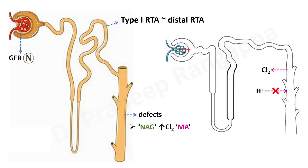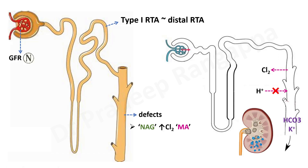In type 1, there is failure of hydrogen secretion in the collecting tubule, so hydrogen remains in the blood, contributing to acidemia. Bicarbonate and potassium are excreted into the tubule, so more acid accumulates in the blood. Distal RTA is also associated with nephrocalcinosis, renal stones, and citraturia. These are some of the key findings.